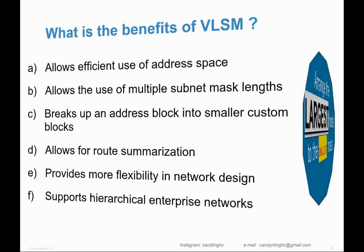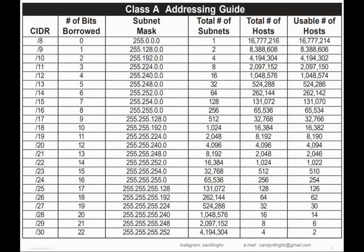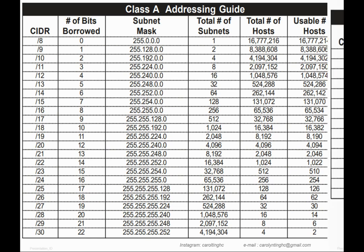Now, how do you calculate VLSM? The tip is to arrange hosts from largest to smallest based on company requirements. I'm giving you a Class A addressing guide for reference. If the maximum number of hosts is 16,777,214, you use a Class A address with CIDR slash 8. The minimum number of usable hosts is 2, which corresponds to slash 30. You can base your VLSM on this table.